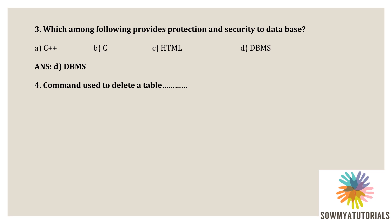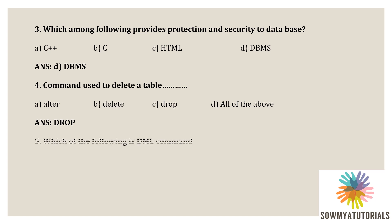Next question: which command is used to delete a table? Options are: option A, alter; option B, delete; option C, drop; option D, all of the above. The correct option is option C, drop. Drop is the command used for deleting a table in a database.